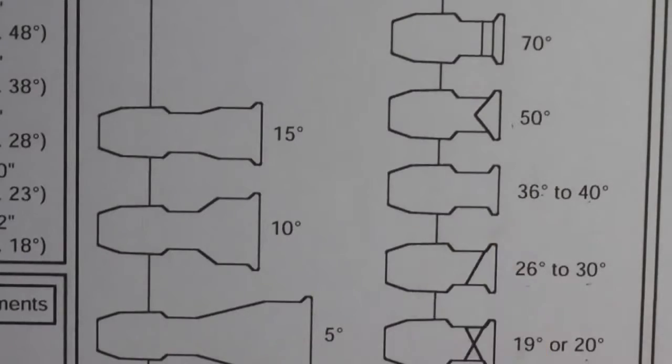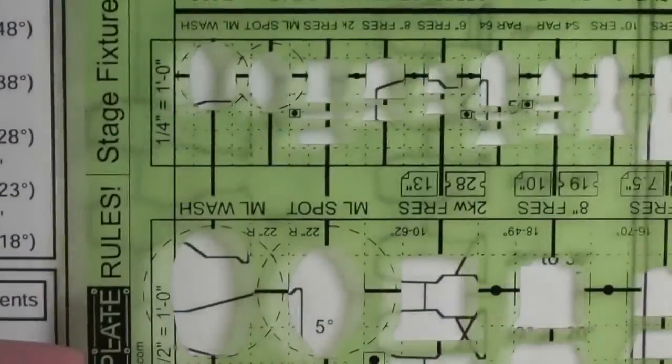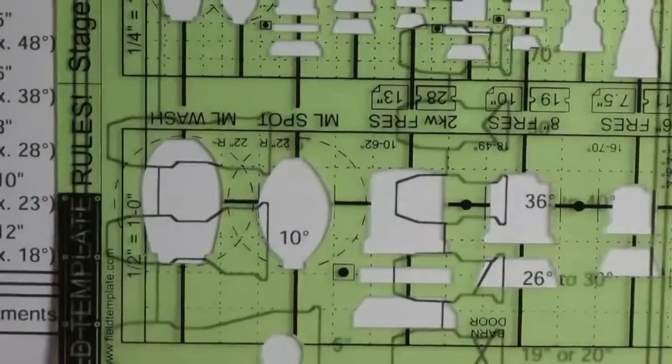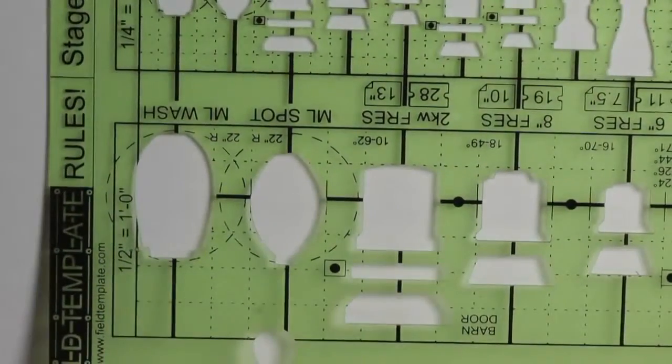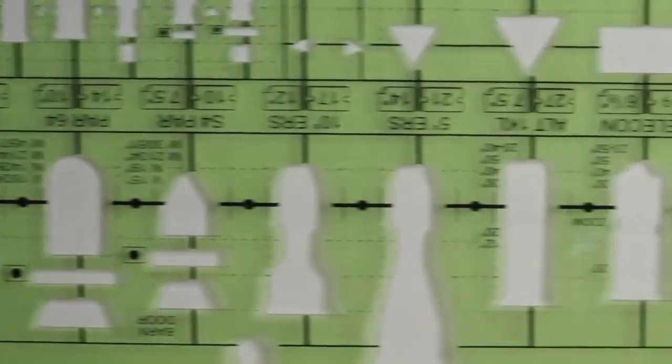How do we make these symbols? Well, we use a template. This here is a template. It has all these shapes cut out of it. It's a piece of plastic with various different shapes.